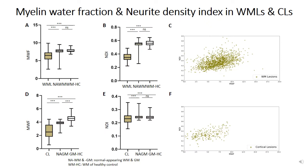As you see in the left panel, we have shown that myelin measured by myelin water fraction and axon measured by NDI have been lower in white matter and cortical lesions than in normal appearing tissue and healthy subjects. As you see in the right panel, myelin water fraction and NDI were proportional to each other in both white matter and cortical lesions.